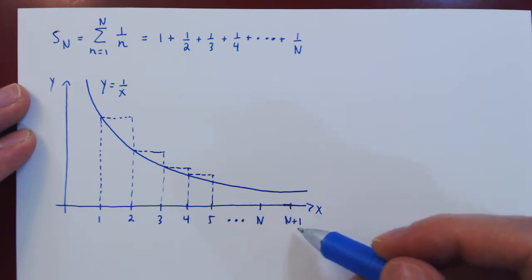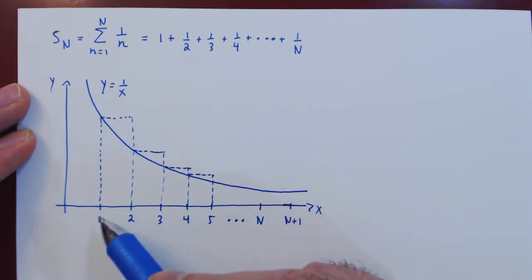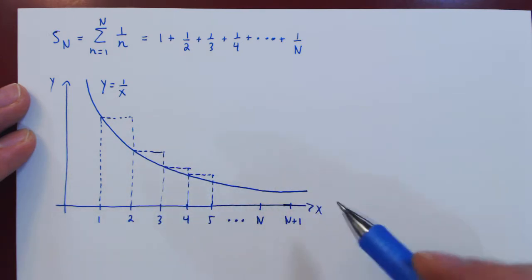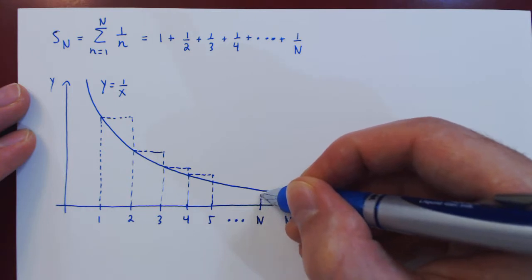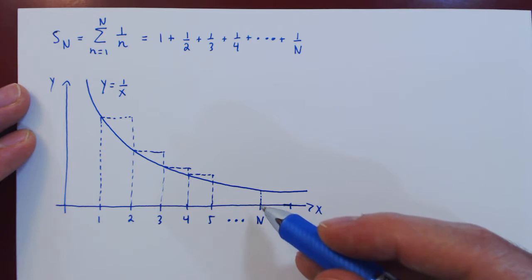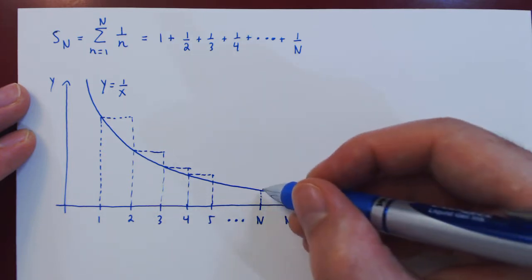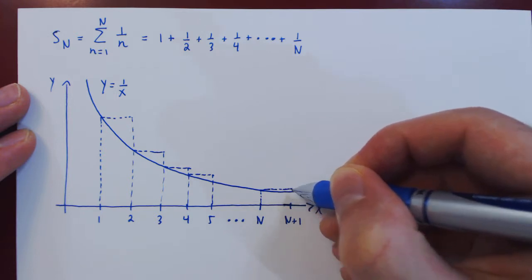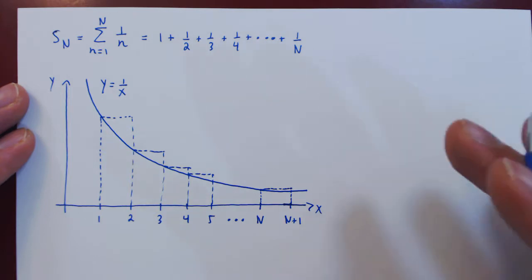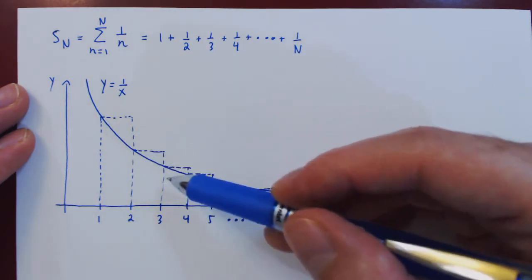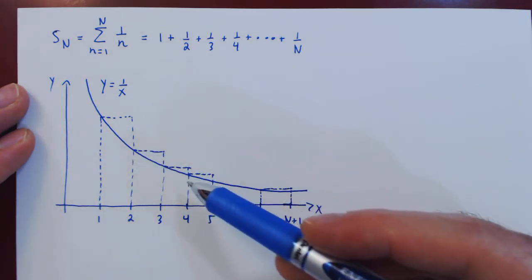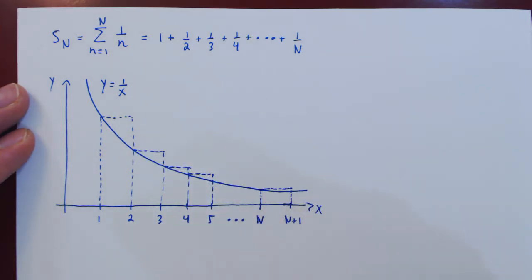You can see why we included n plus 1. We have the first term, the second term, the third, the fourth, up to the nth term. Since we use n as the left endpoint of the interval and use this x-value to find the corresponding y-value — the height of the rectangle — and we are going to the right, we need to consider the point n plus 1. Now it's clear that the total area of these rectangles will be larger than the exact area below the curve y equals 1 over x.